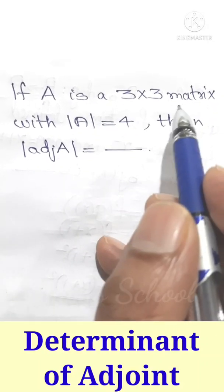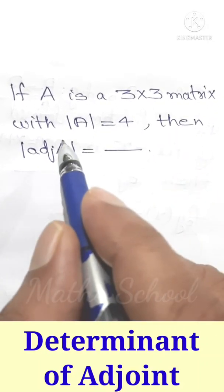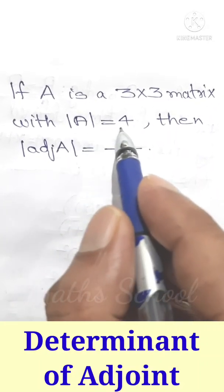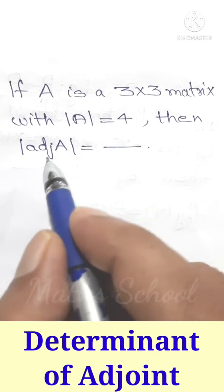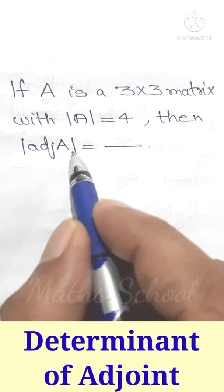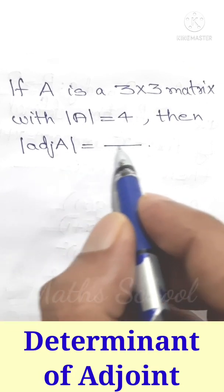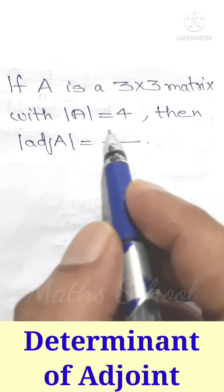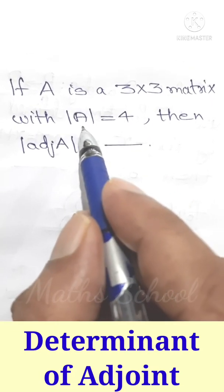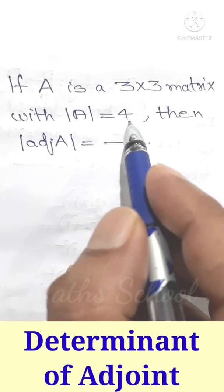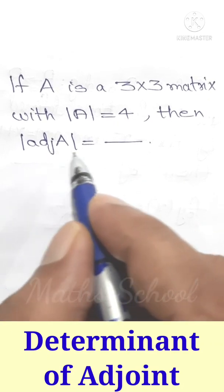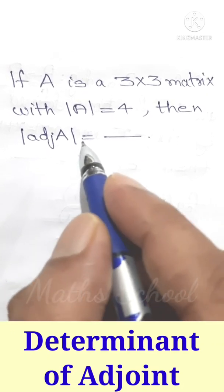If A is a 3 by 3 matrix with determinant A equal to 4, then determinant of adjoint A equals dash. Given determinant A equal to 4, we have to find determinant of adjoint A.